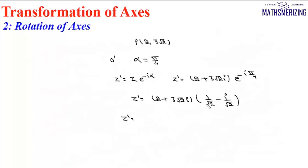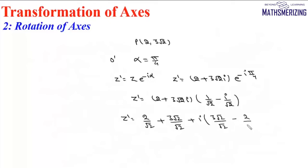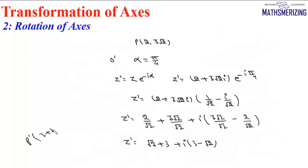So Z dash equals (2 plus 3√2 iota)(cos(pi/4) minus iota sin(pi/4)), which is (2 plus 3√2 iota)(1/√2 minus iota/√2). The real part is 2/√2 plus 3√2/√2 equals √2 plus 3. The imaginary part is 3√2/√2 minus 2/√2 equals 3 minus √2. So Z dash equals (3 plus √2) plus iota(3 minus √2), meaning the coordinate of point B in the new system is (3 plus √2, 3 minus √2).